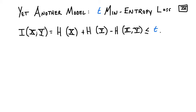How do we show this upper bound? The way it works is through yet another model of bounded dependence between sources — a model we call T min-entropy loss. Recall the definition of mutual information: it's the sum of the individual entropies minus the joint entropy. We want to bound this difference by T. Min-entropy loss simply replaces these Shannon entropies with min-entropy.